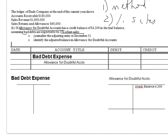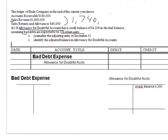Now we're all ready to go. The first requirement is to prepare the adjusted journal entry as of December 31st using 1% of net sales. In this case, I did not give you net sales directly, but you do have these two numbers. If you take sales revenue minus sales returns and allowances, that will provide you with a net sales amount of $1,740,000. By taking 1% of that net sales, that will give you the adjusted balance in bad debt expense: $17,400. That's your 1% of net sales.